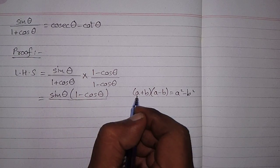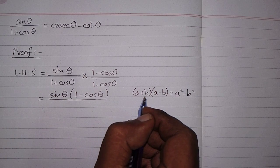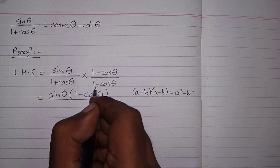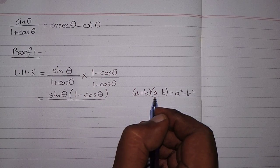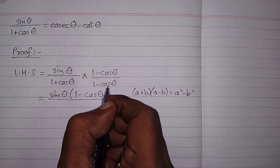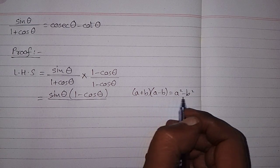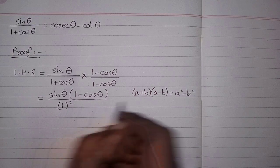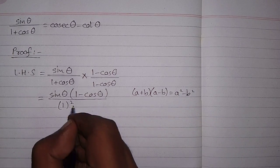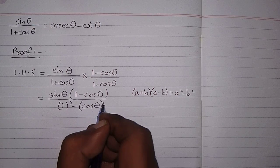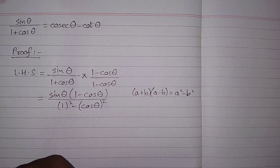Here we have 1 plus cos theta in place of a plus b, so the value of a is 1 and the value of b is cos theta. And in place of a minus b we have 1 minus cos theta, again with a equal to 1 and b equal to cos theta. So this converts into a squared minus b squared, giving us 1 squared minus cos squared theta.